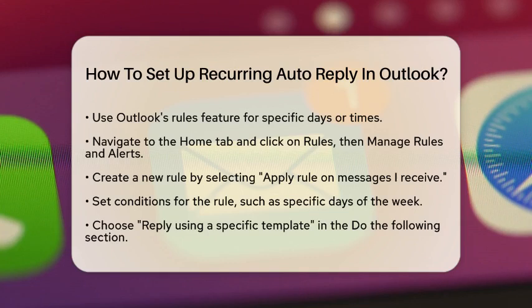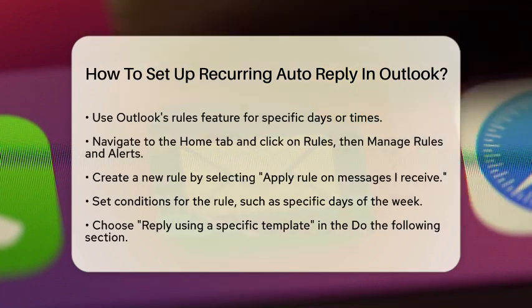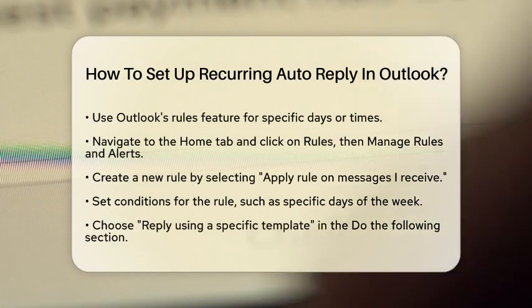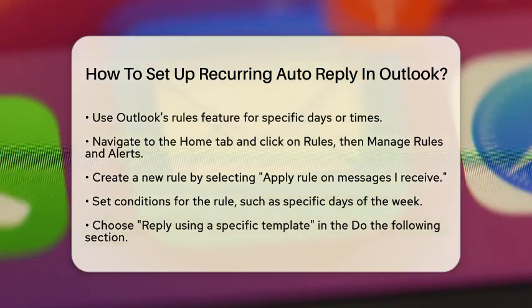In the Do the Following section, select Reply using a specific template and choose a custom template that you have prepared. After naming your rule, ensure it is turned on so that it functions as intended.